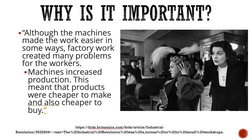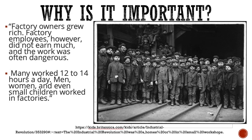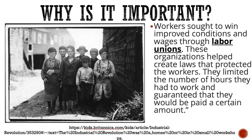The machines made work easier in some ways, but factory work also created problems for workers. Machines increased production, so products were cheaper to make and cheaper to buy. Factory owners grew very rich, but employees did not earn as much, and the work was often very dangerous. People were working 12 to 14 hours a day, and that included men, women, and even small children. Workers sought to win improved conditions and wages through labor unions. These organizations helped create laws that protected workers, limited the number of hours they had to work, and guaranteed a certain minimum wage.